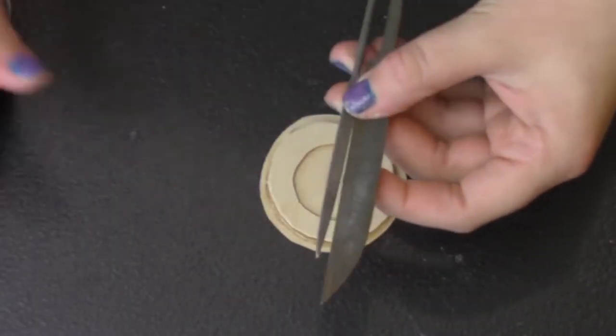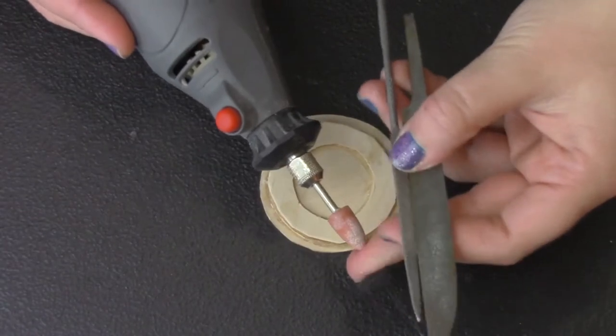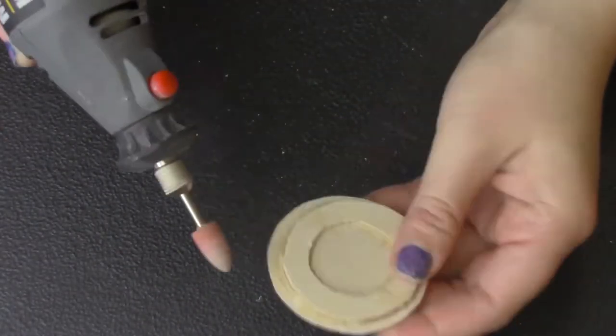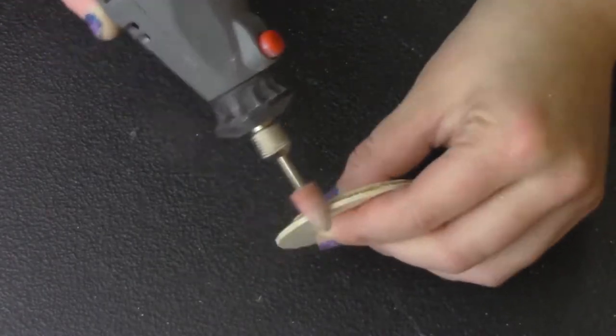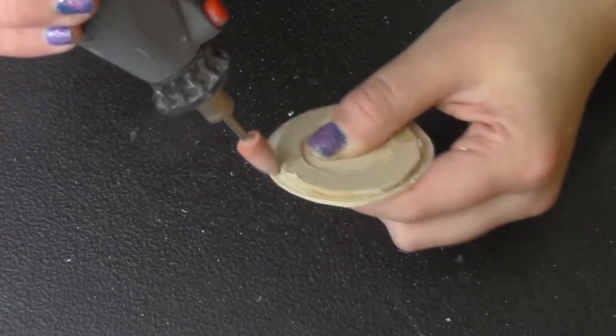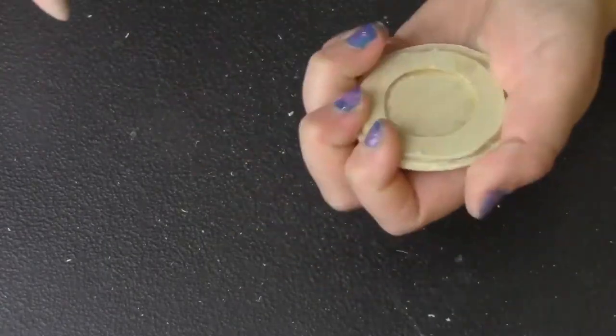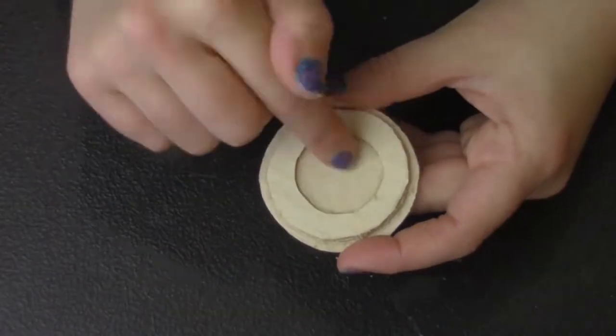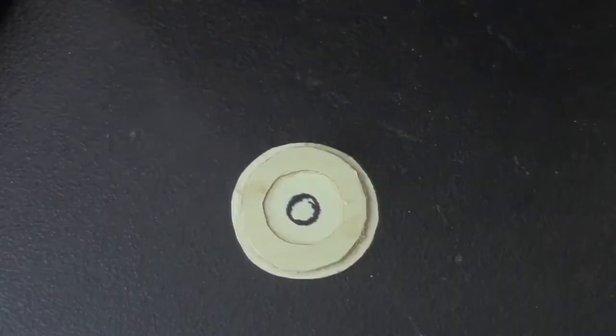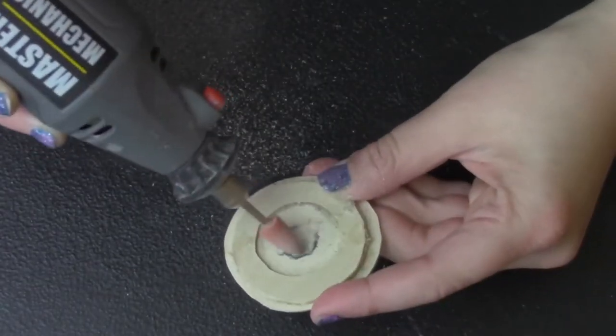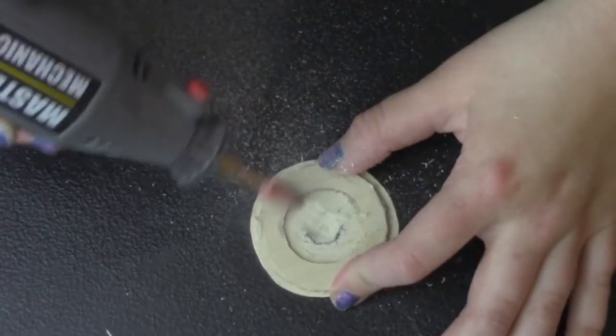Once they're dry, we're going to file them down. You can use your own files or you can use a Dremel. I'll be using a Dremel. File down all the edges on the outside and the inside of the circles. To make the dome shape for the log pose, I've added a small circle to the inside of my piece and filed that out.